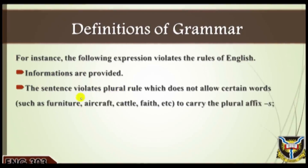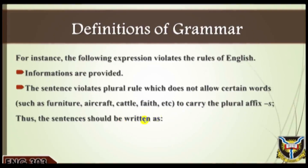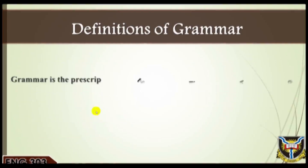The first sentence violates the plural rule, which does not allow certain words such as furniture, aircraft, cattle, faith, and so on to carry the plural affix 's.' The second sentence is wrong because the verb 'go' has a separate mechanism for changing the present form to the past. The third sentence violates the subject-verb concord rule, which stipulates that a subject and its verb must agree in person and number. Thus the sentences should be written respectively as: (a) 'Information is provided,' (b) 'He went to school yesterday,' (c) 'Boys play pranks.'